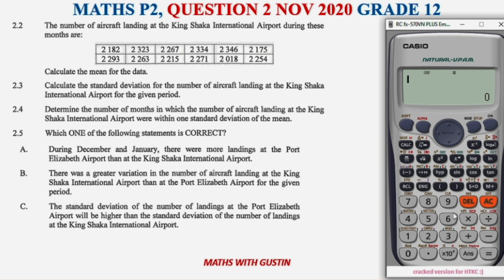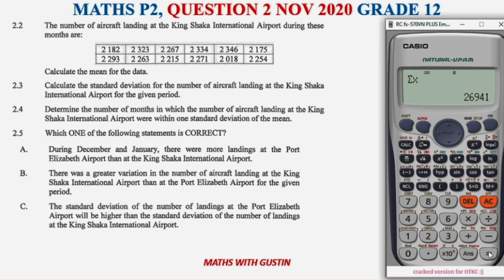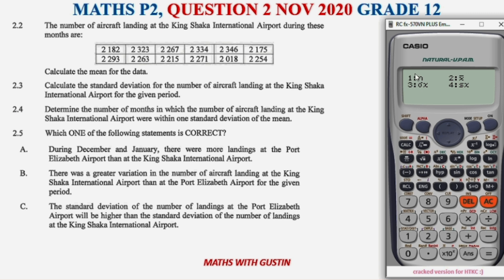Press AC. Now for the mean — since two marks are typically allocated for the mean, I suggest finding the sum first. Go to Shift > Stats, choose option 3 for sum, and press equals: the sum is 26,941. Write that down. Then look for n — the number of data points — which is 12. So the mean is 26,941 divided by 12.